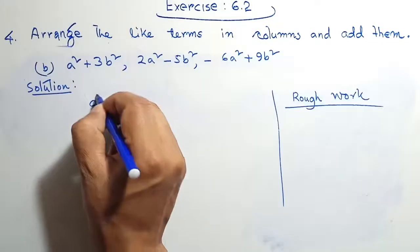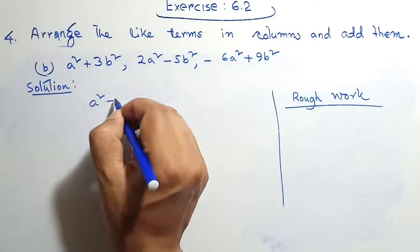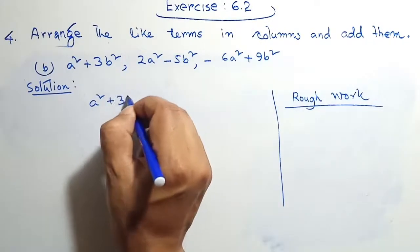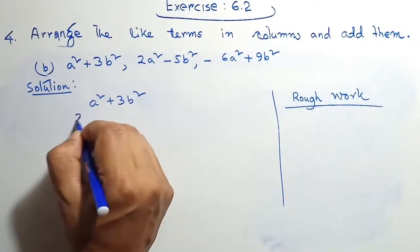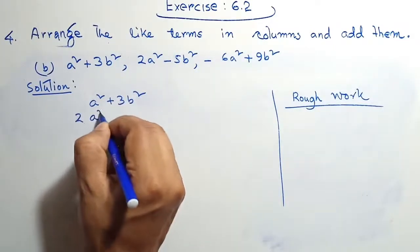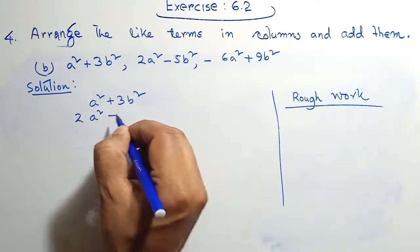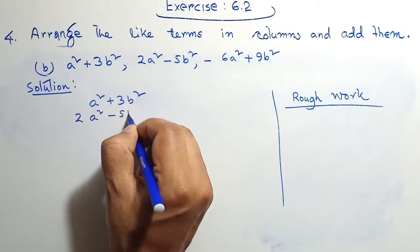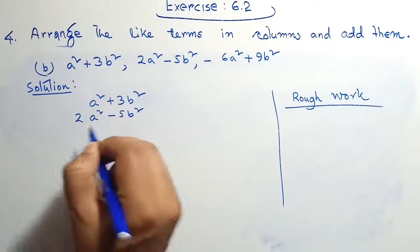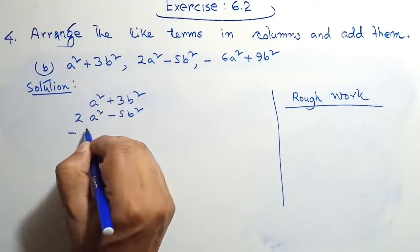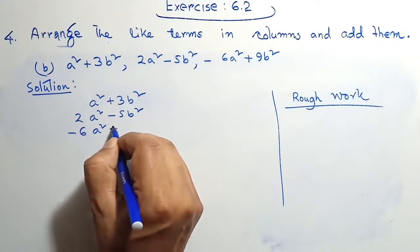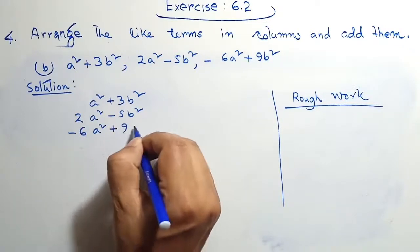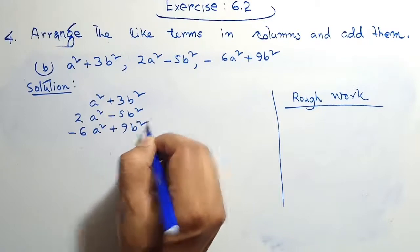a² plus 3b². 2a² minus 5b² minus 6a² plus 9b².